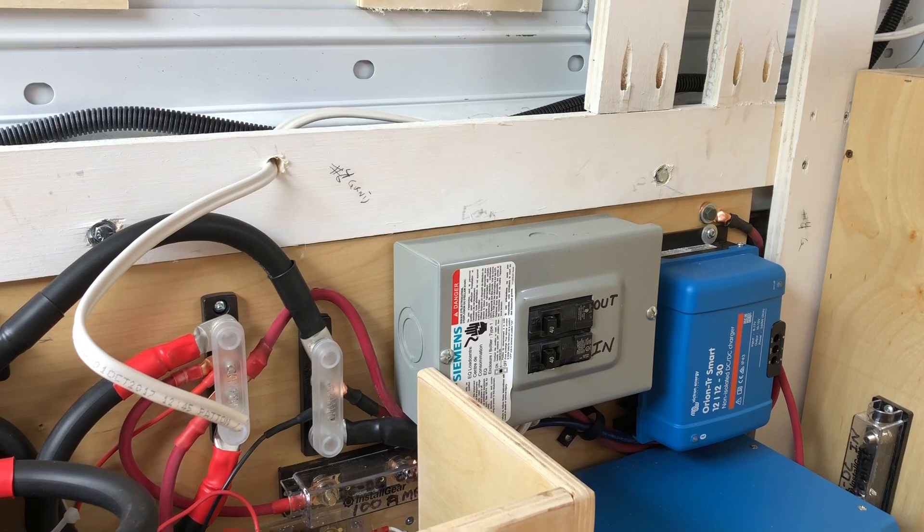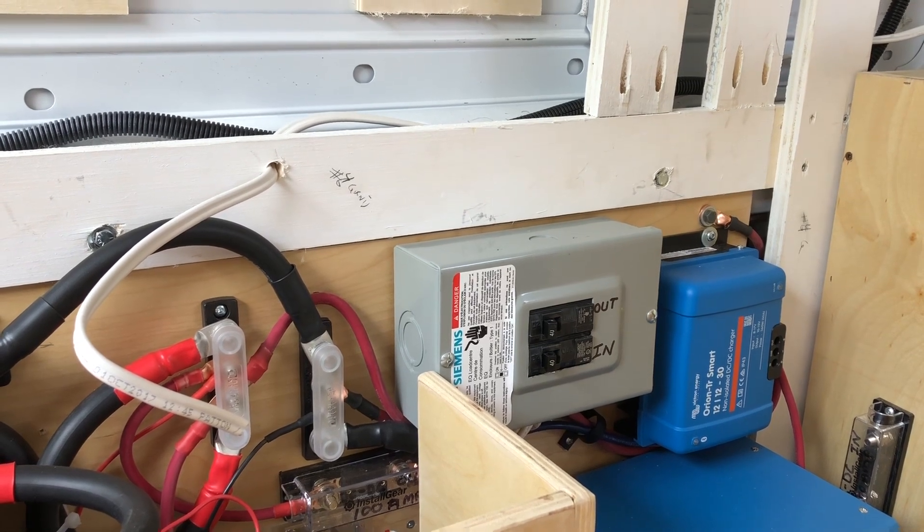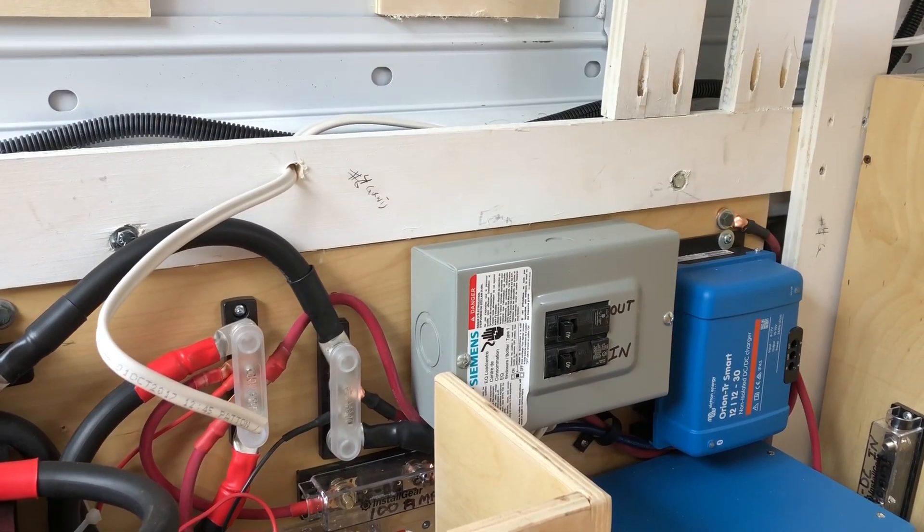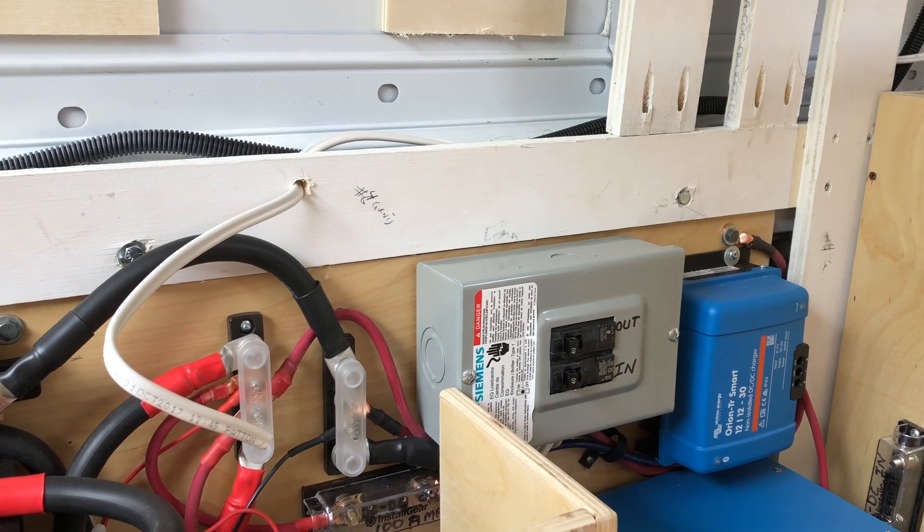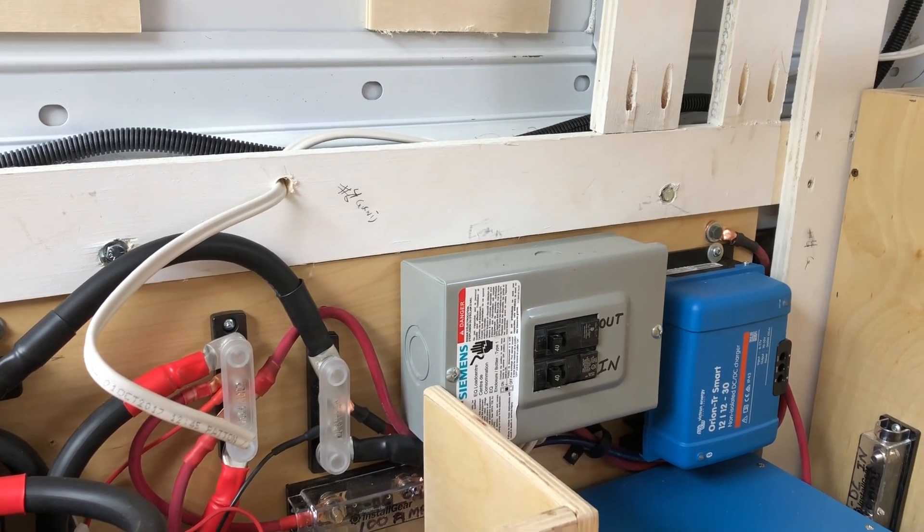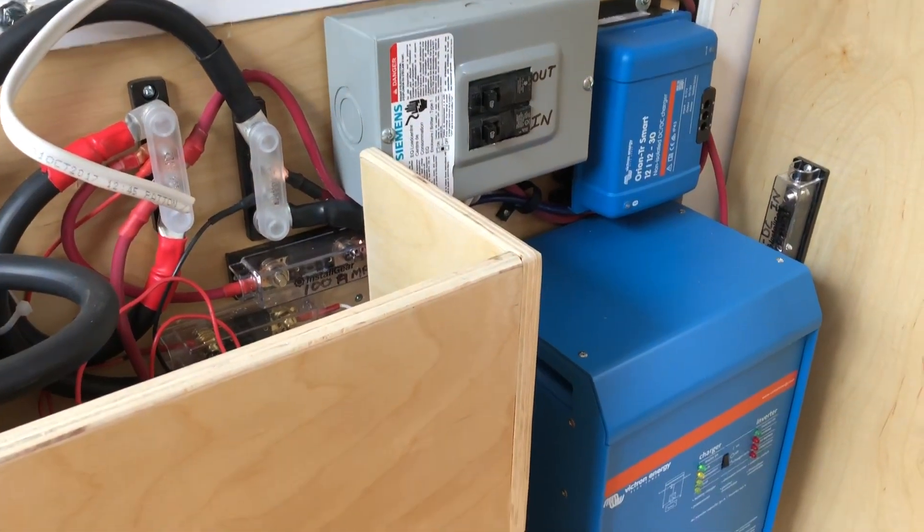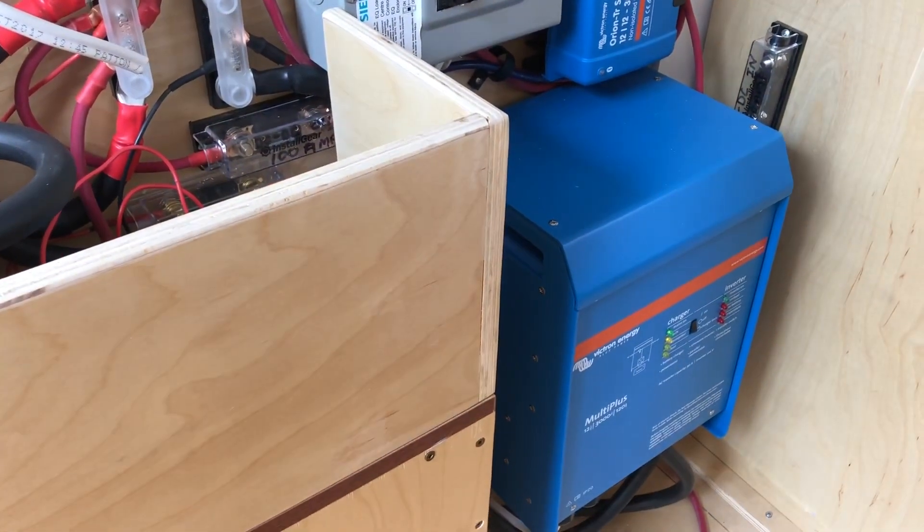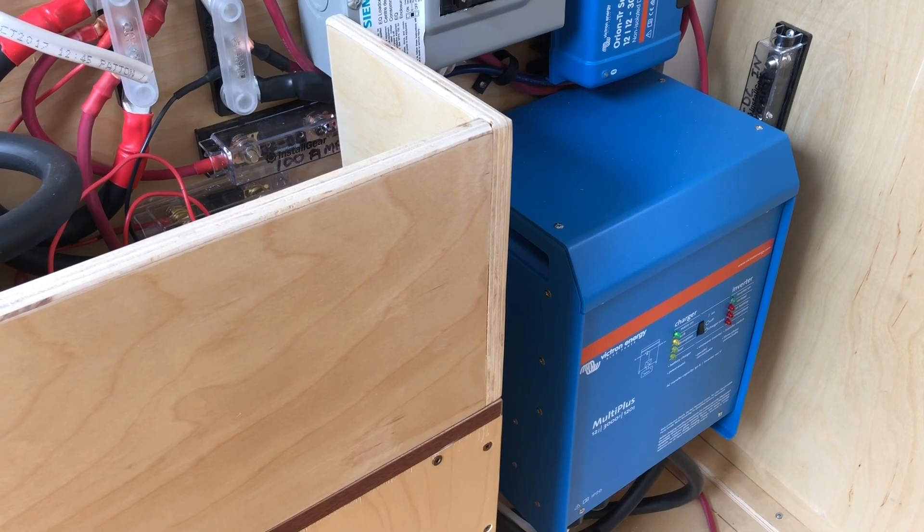So here I have two 40 amp breakers on a small panel. One is for the plug I just plugged in. It comes into the in so it's protected from anything on the outside. From there it goes directly down to my Victron Energy Multi Plus 3000.